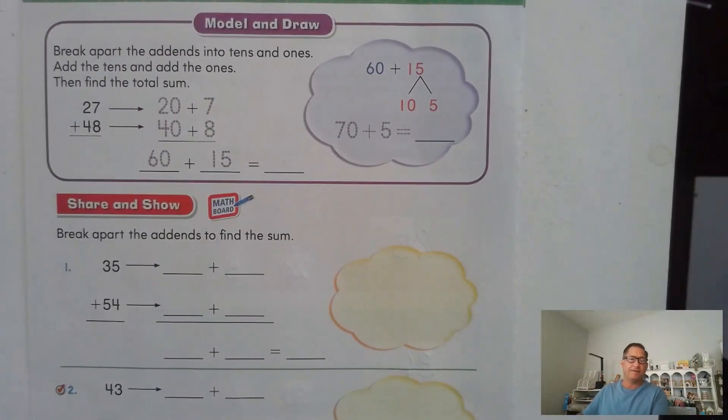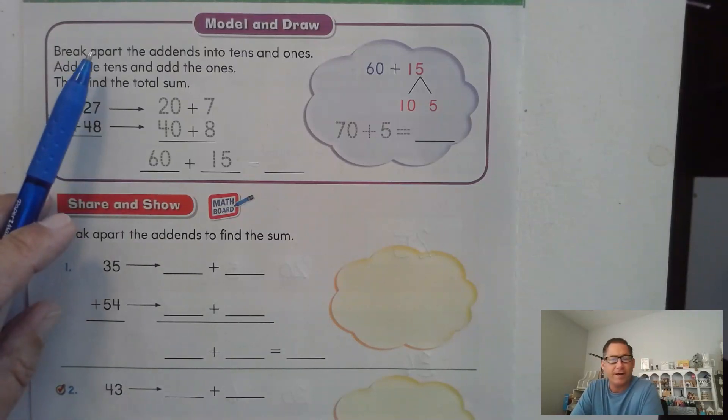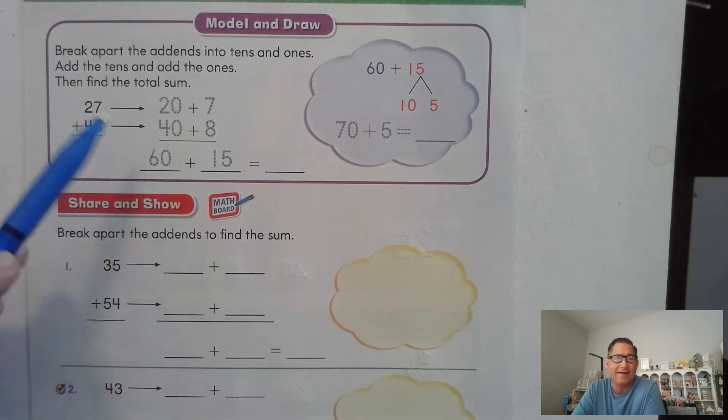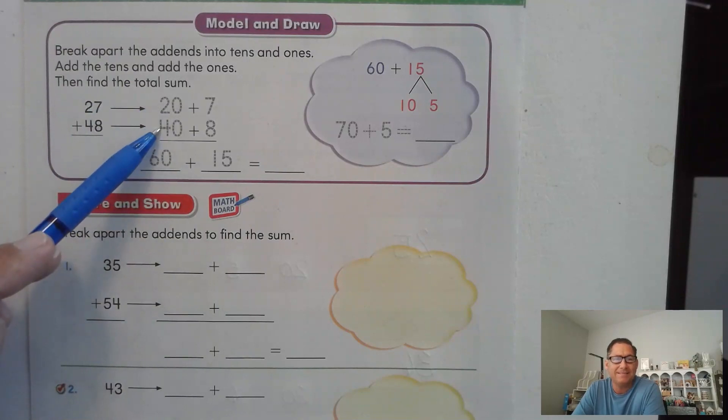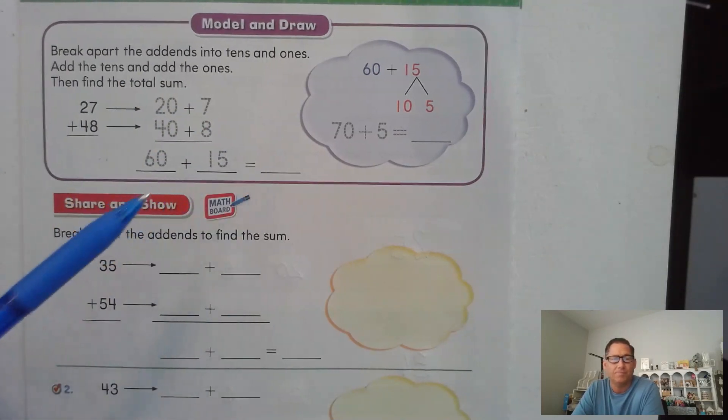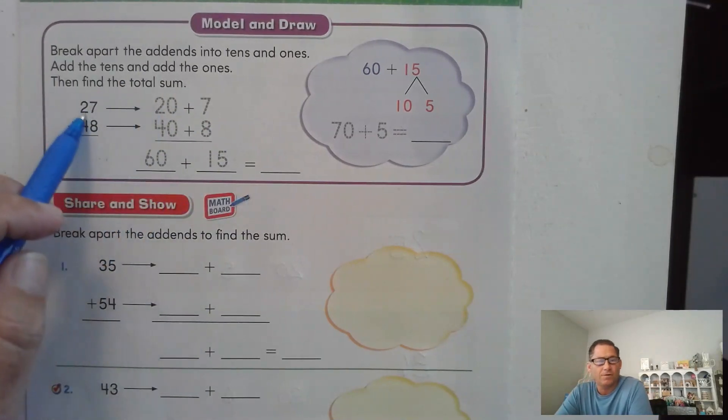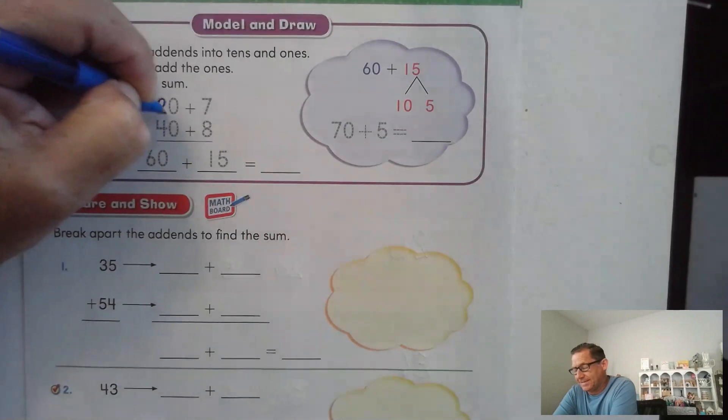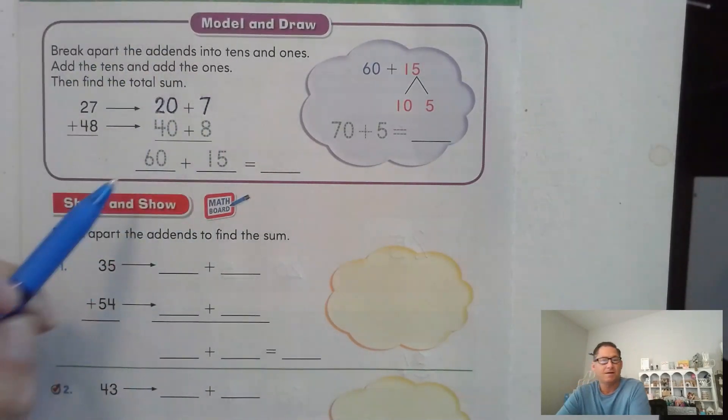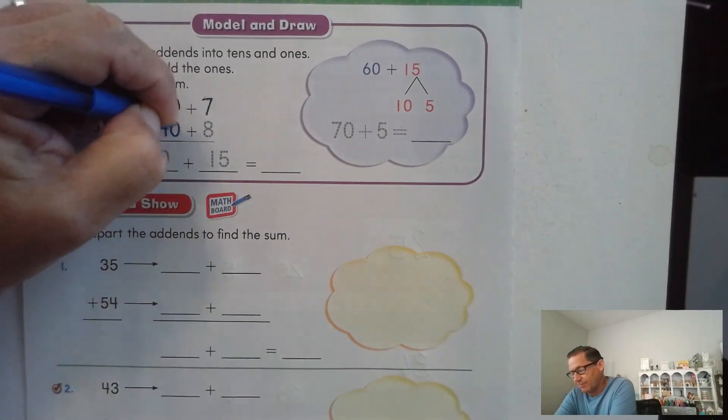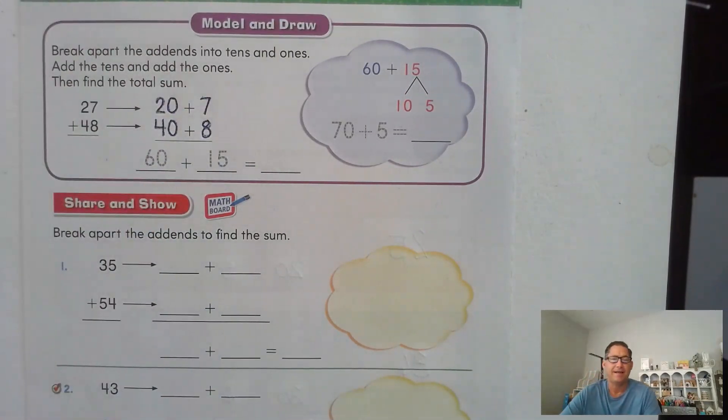Let's look at page 182. So what are we going to do in these problems to add? We're going to break apart the addends into tens and ones for each number being added. Then we're going to add the tens. And then we're going to add the ones. And then we're going to find the total sum. So 27. If I break that apart into tens and ones, that would be 20 and 7. So we broke apart 27 into tens and ones. 48.